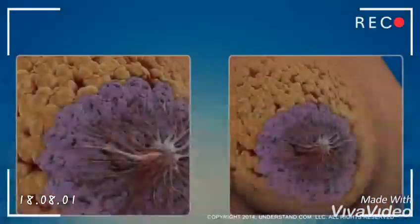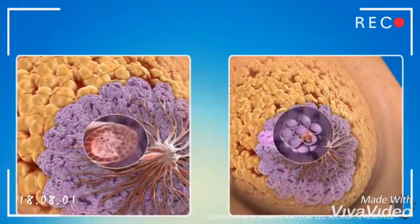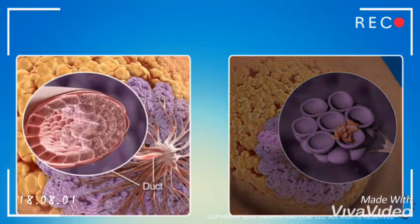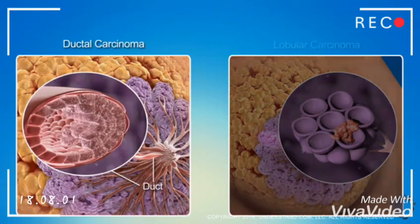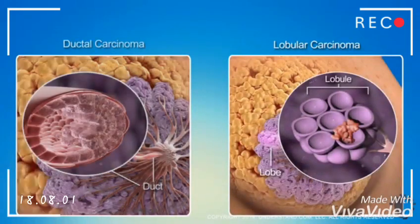There are two main types of breast cancer. The most common form starts in the ducts and is called ductal carcinoma. The second type is known as lobular carcinoma, since it begins in the lobules.